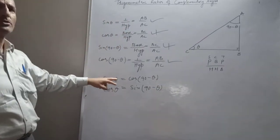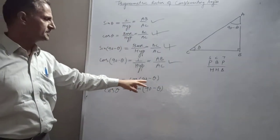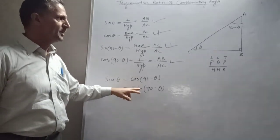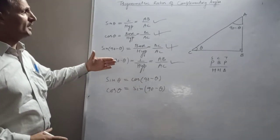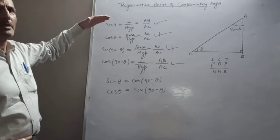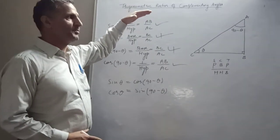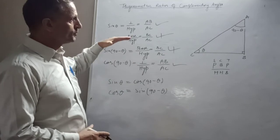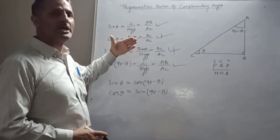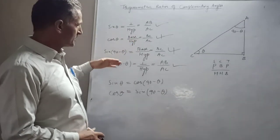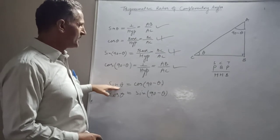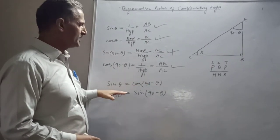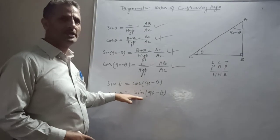So what you have to remember: sin theta equals cos of (90 minus theta), and cos theta equals sin of (90 minus theta). Though this topic has been deleted by the CBSE board, it is still motivation for you. We can use complementary angles in the next chapter — Heights and Distances — to understand how sin theta changes into cos theta and vice versa. Thank you.